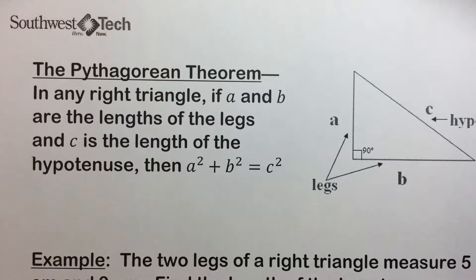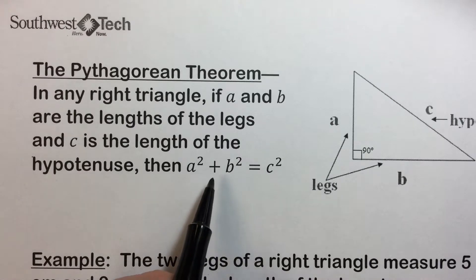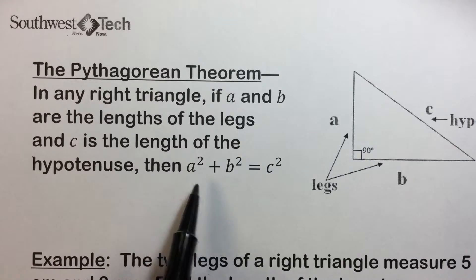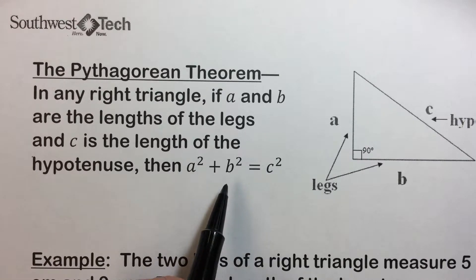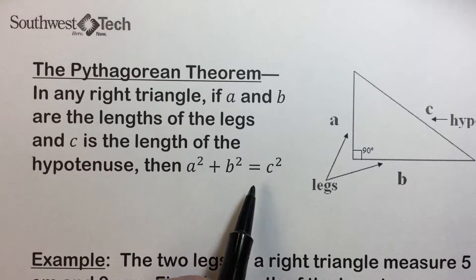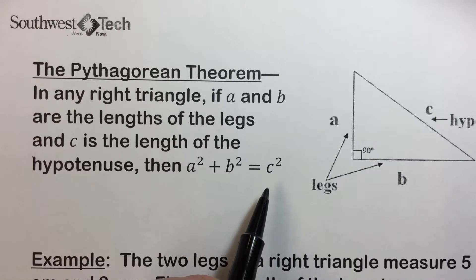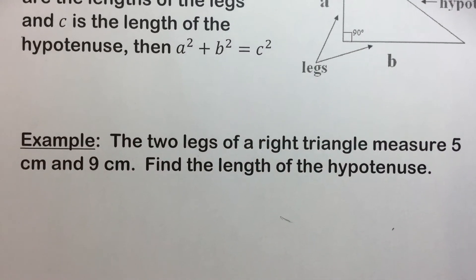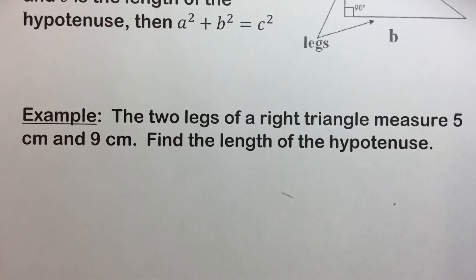Then A squared plus B squared equals C squared. In other words, the sum of each leg length squared is equal to the hypotenuse squared. Let's use the Pythagorean theorem to solve this example.